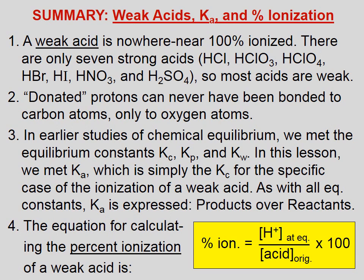Let's summarize weak acids, Ka, and percent ionization. First, a weak acid is nowhere near 100% ionized. There are only seven strong acids, so most acids are weak. Second, donated protons can never have been bonded to carbon atoms — only to oxygen atoms. Third, Ka is simply the Kc for the specific case of the ionization of a weak acid; as with all equilibrium constants, Ka is expressed as products over reactants. Fourth, the equation for calculating percent ionization of a weak acid is shown in yellow.